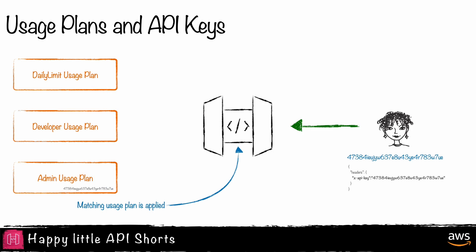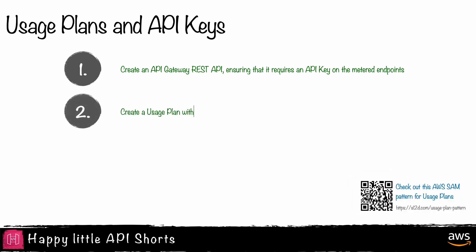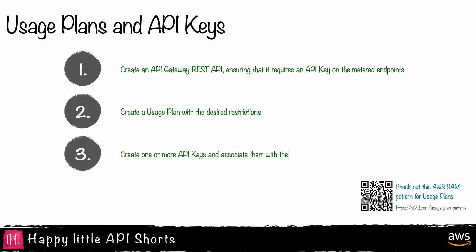To create an endpoint with usage plans, follow these steps. One, create an API Gateway REST API ensuring that it requires an API key on the metered endpoints. Two, create a usage plan with the desired restrictions. Three, create one or more API keys and associate them with the usage plan. Four, distribute the API keys to your clients.